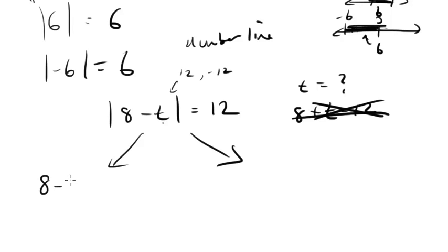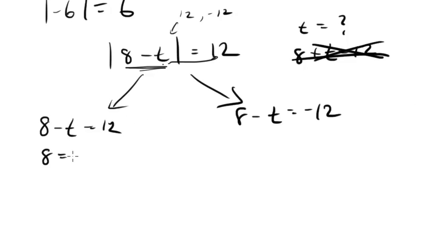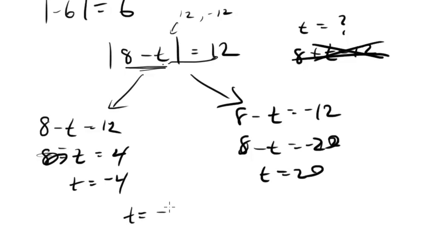The way to solve these equations is to say, let's break it up. Let's have the case where 8 minus t equals 12, and that's fine. And also the case where it equals negative 12, because when this is negative 12, it just turns into 12. Now we just solve both of these equations. This would be minus t equals 4, so t would equal minus 4. And on this side, we're going to have minus t equals minus 20, t equals 20. So here, my two t's are going to be negative 4 and 20. And that's pretty much all we need to do with absolute value for the SAT.